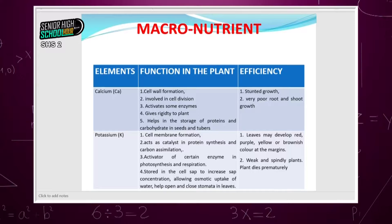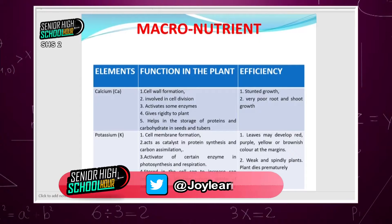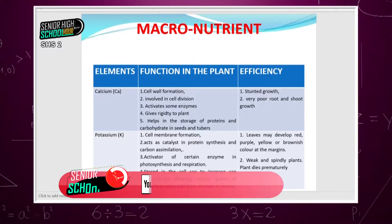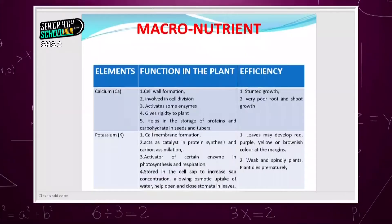Potassium is needed for activating enzymes in photosynthesis and respiration. Without it, photosynthesis suffers. It is also used as a catalyst in protein synthesis and in cell membrane formation. When a plant lacks potassium, the leaf may develop red, purple, yellow, or brownish color at the margins. If you see such discoloration at the margins, potassium is likely inadequate, and the plant may become weak and die prematurely.